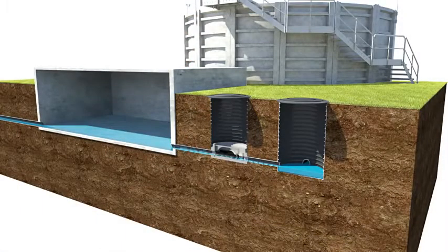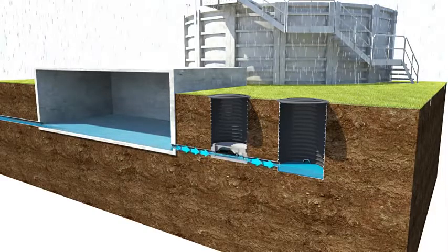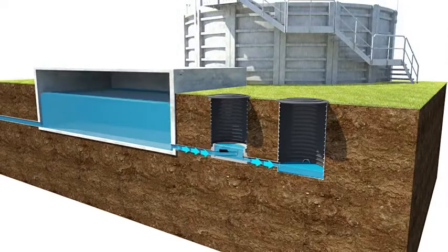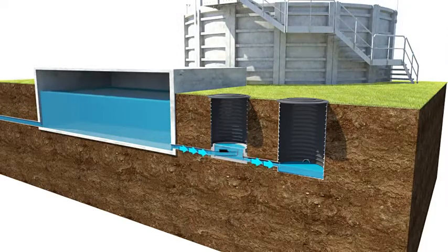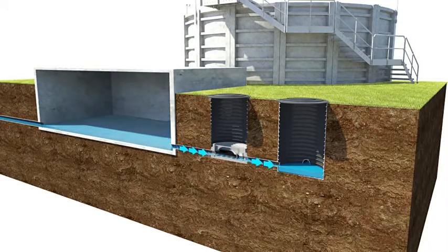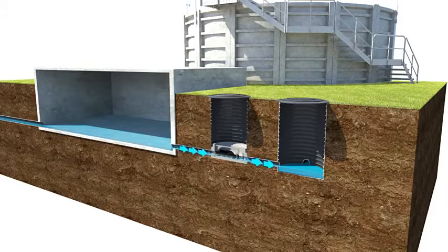Vareg equalises flow to treatment plants or pumping stations. During periods of high rainfall, Vareg directs the peak flow to the reservoir until flow is normalised again and the magazine can be emptied. This means that overloading in the treatment plant and overflows at pumping stations can be avoided.